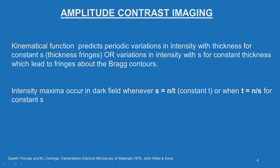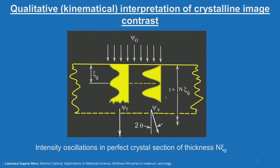Intensity maxima occur in the dark field whenever S = n/T at constant thickness, or when T = n/S for constant S. Before going to actual imaging, let us look at a very interesting and fundamental slide. This is the most fundamental idea one should understand before interpreting image contrast.